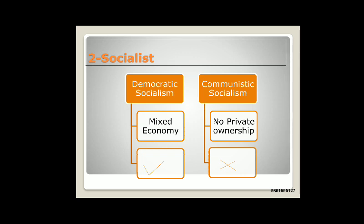In a communist state, the factors of production and resources belong to the state — what to produce, when to produce, how to produce, and for whom to produce are decisions completely taken by the state. India uses democratic socialism. Communistic socialism was used in China and USSR. In India, as there is a mixed economy, both public and private sectors exist — a good example is the telecom sector, where the public sector has BSNL and VSNL and the private sector has Jio and Idea. So public and private sector co-existence makes this democratic socialism.